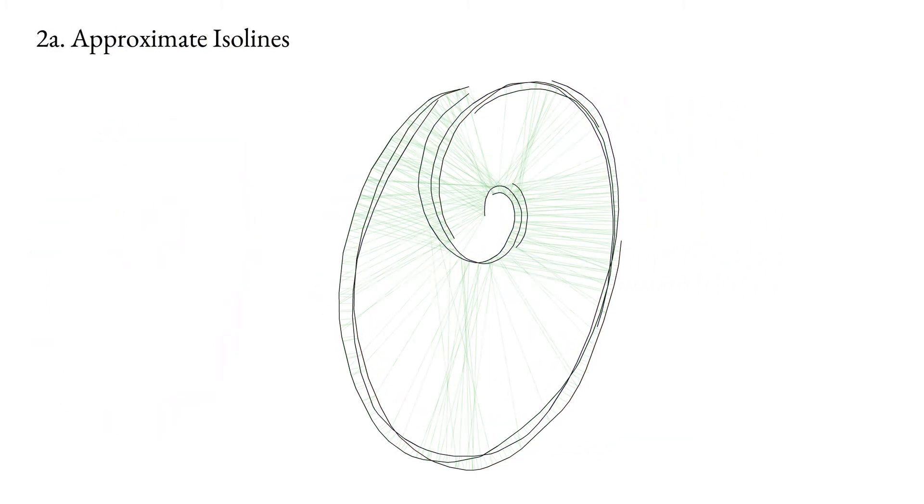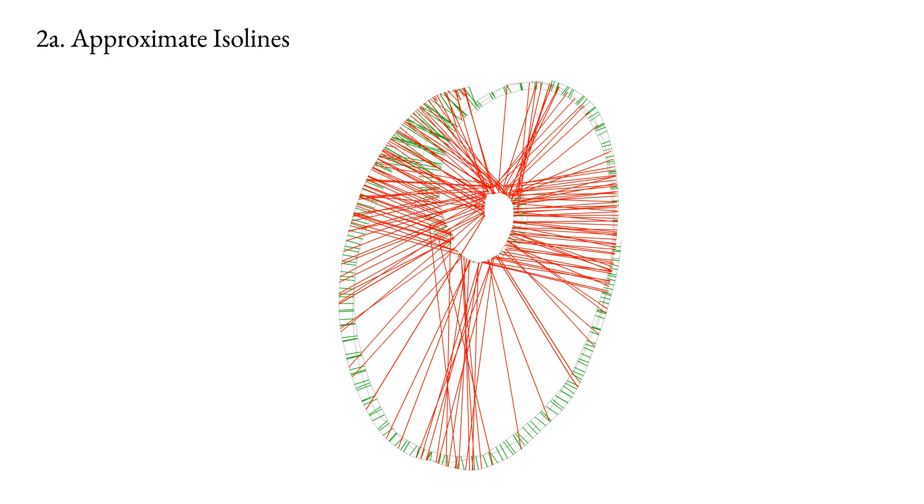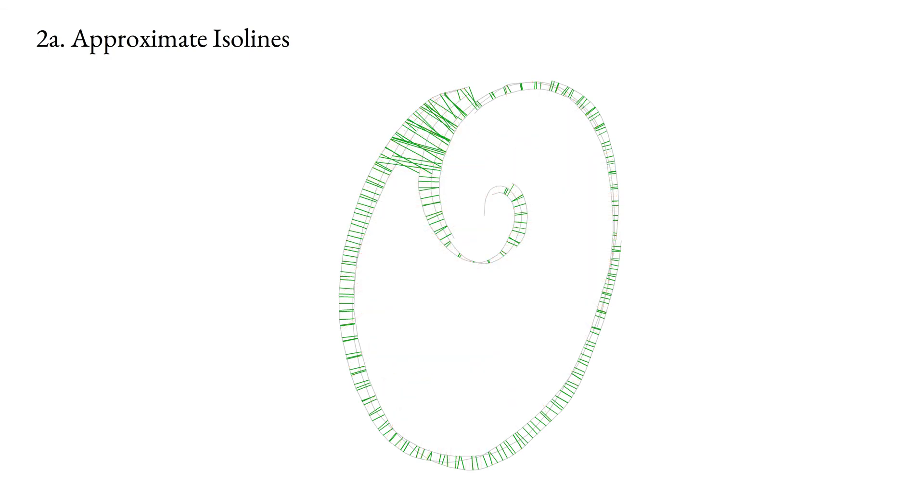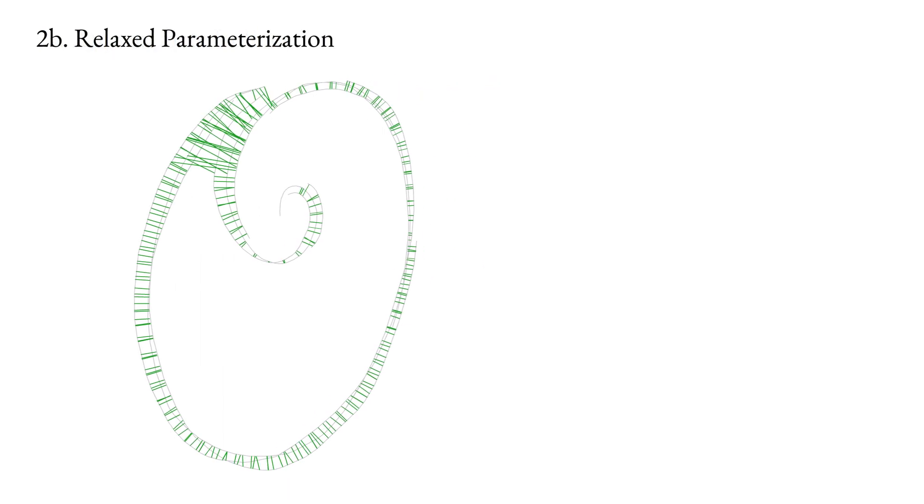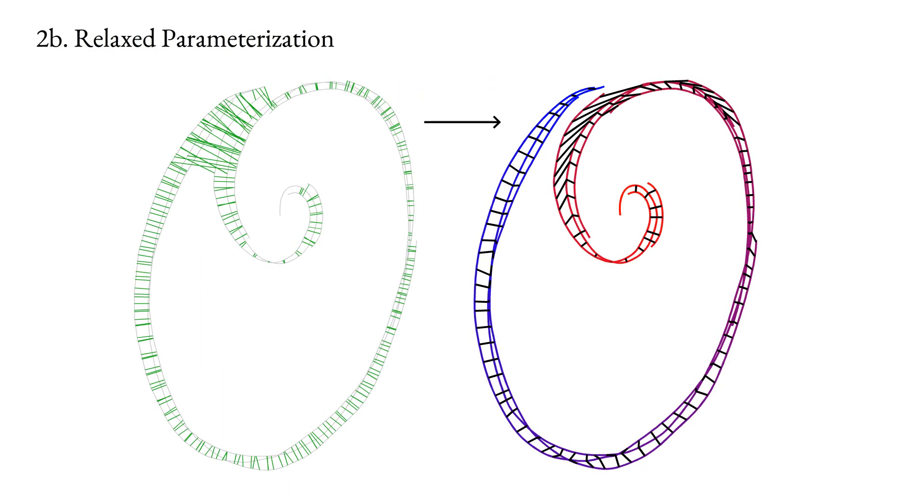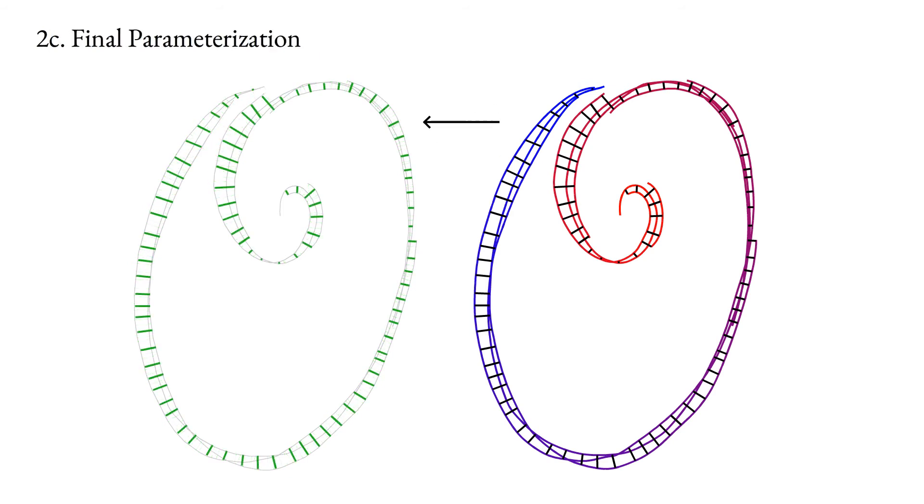We then compute the desired parameterization by first identifying points along different strokes that are likely to be adjacent within the strip. We simultaneously identify the subsets of these points that are indeed adjacent within the strip and, using a local-global optimization scheme, obtain a parameterization that is arc-length-preserving and that assigns similar iso-values to points in this subset. We use this relaxed parameterization as an initial guess for computing our desired joint parameterization.